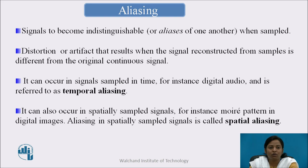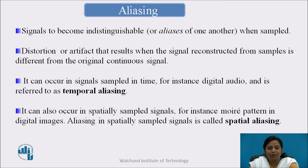Aliasing is the effect that causes signals to become indistinguishable when sampled. It also refers to distortion or artifacts that result when the signal reconstructed from samples is different from the original continuous signal. It can occur in signals sampled in time — for instance, digital audio — referred to as temporal aliasing. It can also occur in spatially sampled signals — for instance, in digital images — which is called spatial aliasing.